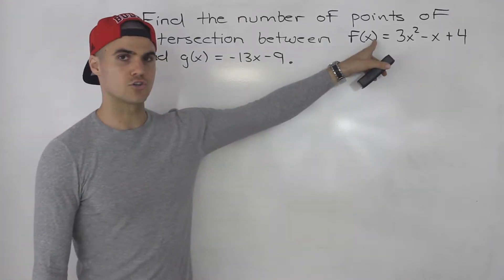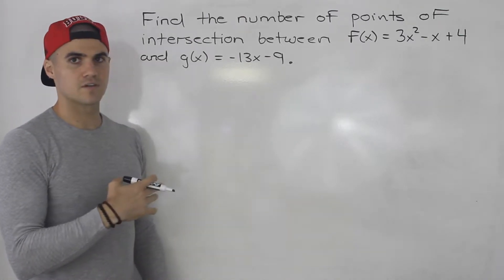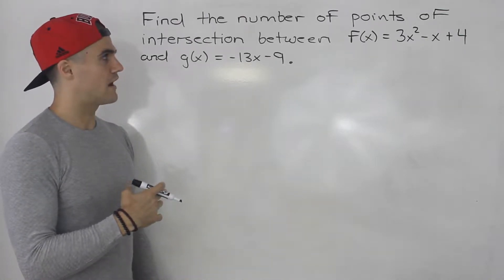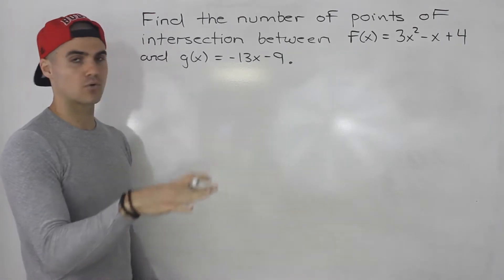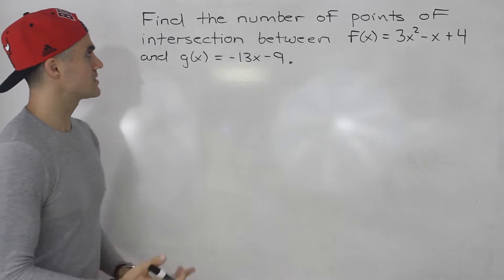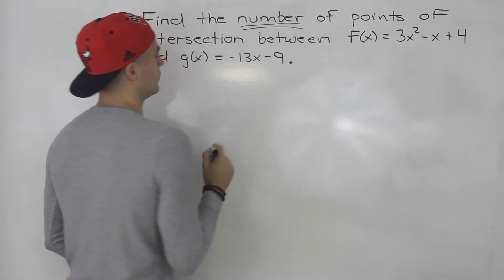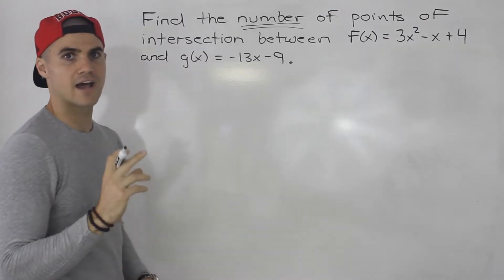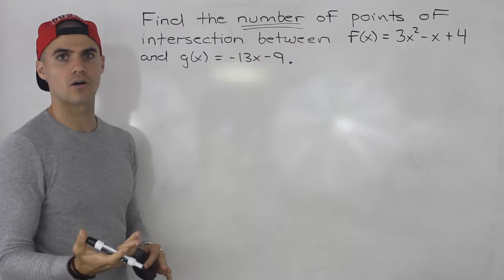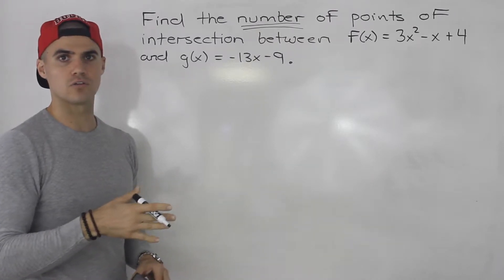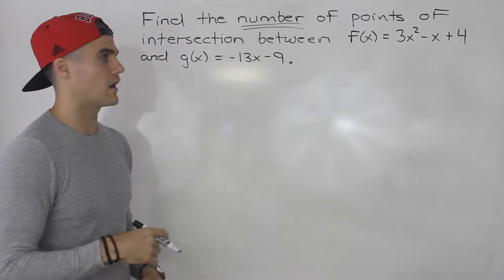Notice we're dealing with a quadratic and a line here. In the previous video, we were finding the actual points of intersection between quadratics and lines. But in this question, notice they're asking for the number of points of intersection — not the actual points, just how many there are. In the previous video, I showed you there could be three cases: two points of intersection, one, or none.